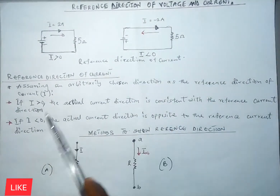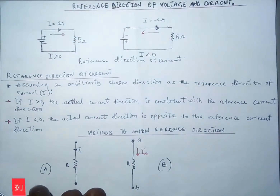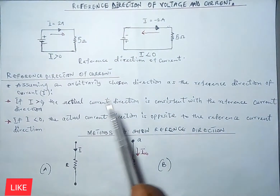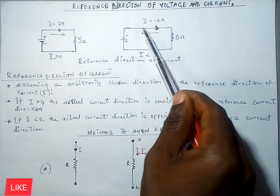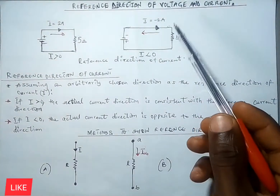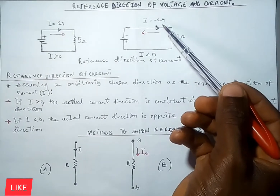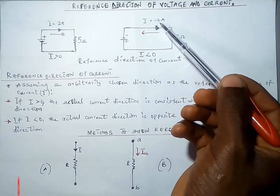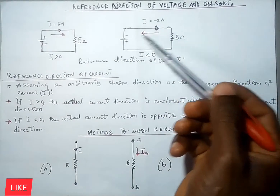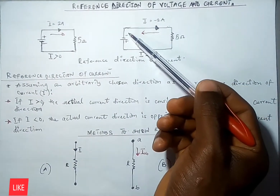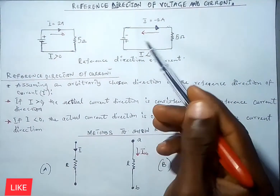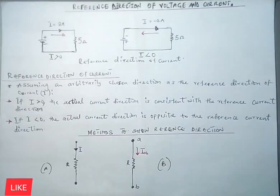On the other hand, if our current I is less than zero, the actual current direction is opposite to the reference current direction. So after we calculate this circuit, if we find the value of our current is minus 2A, it will not follow the assumed reference direction — the direction will go to the opposite side, giving us minus 2A, which is opposite to the reference current direction.